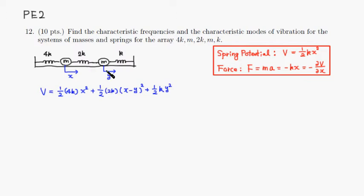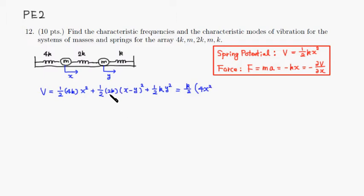Let's simplify by factoring out k/2. From the first term, 4x squared remains. From the second term, 2 times (x minus y) squared expands to 2x squared minus 4xy plus 2y squared.